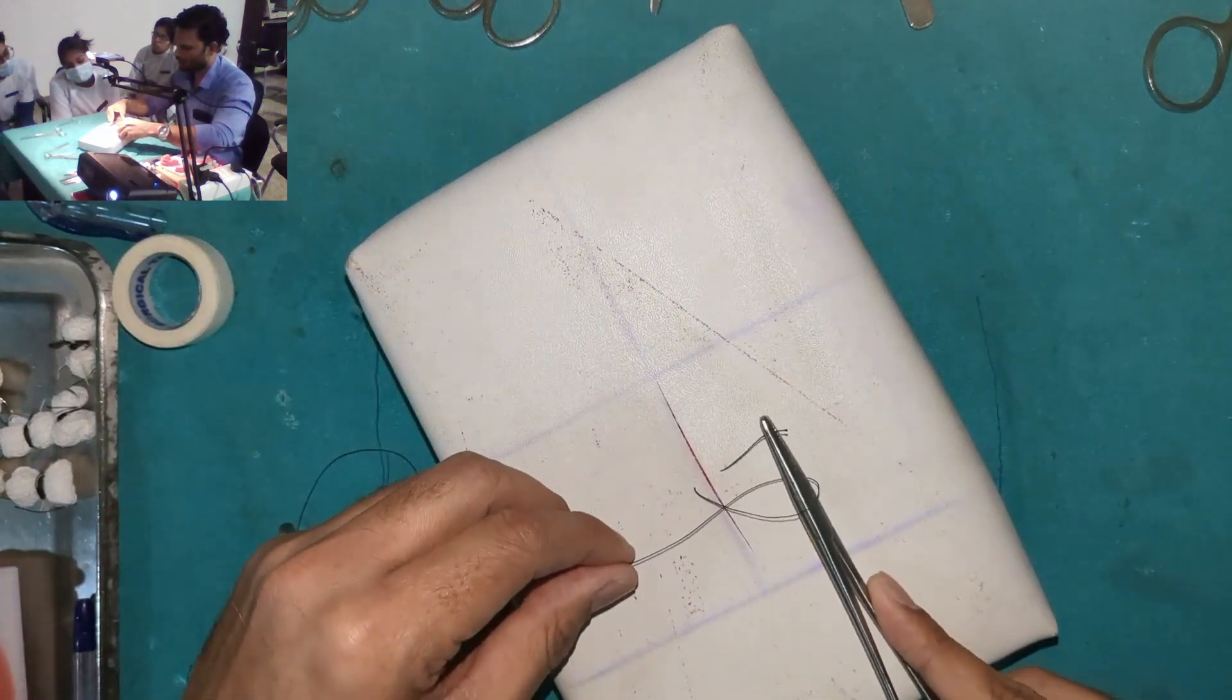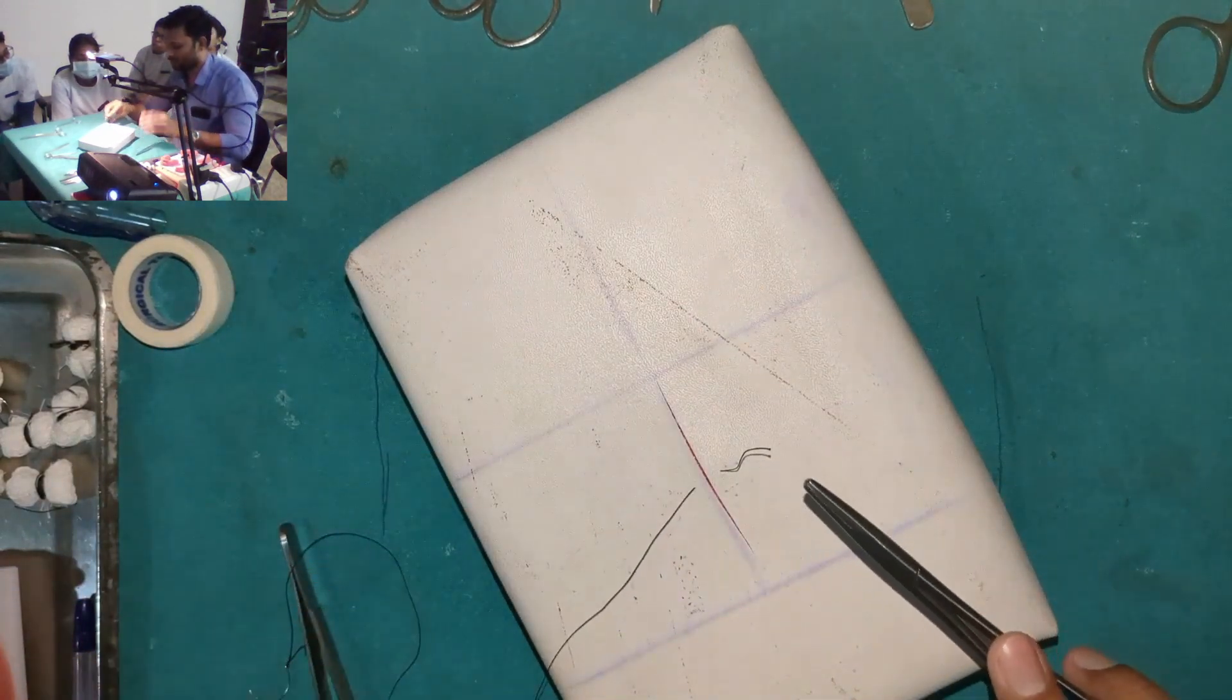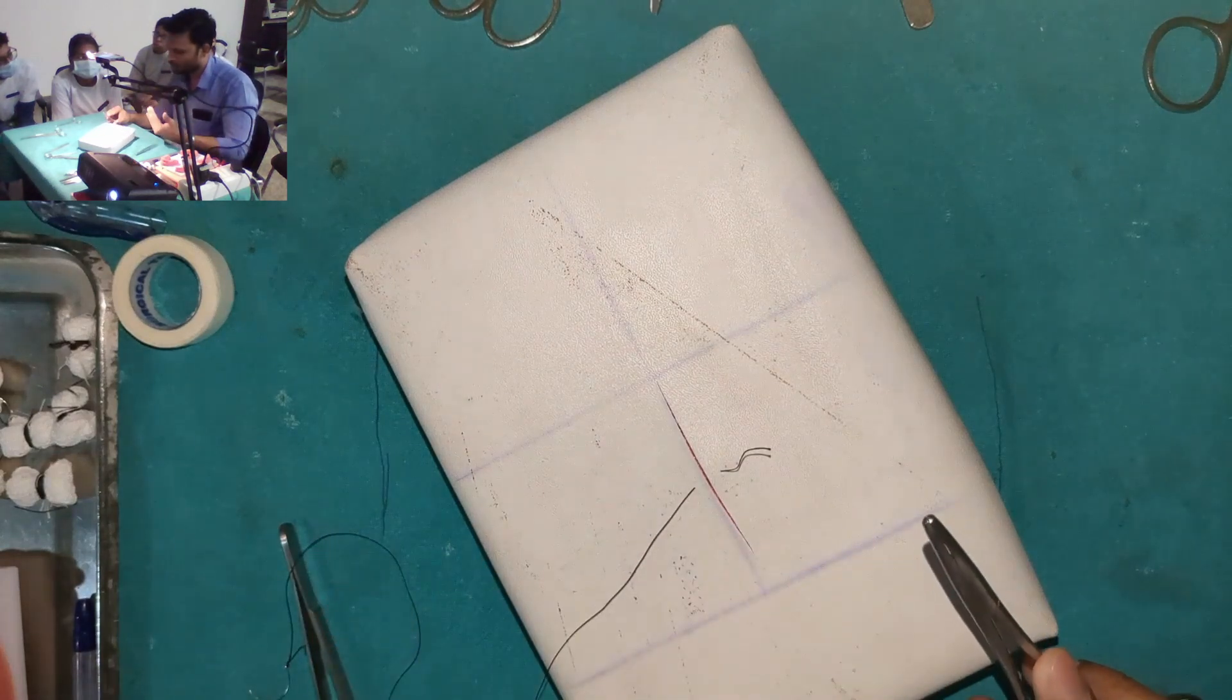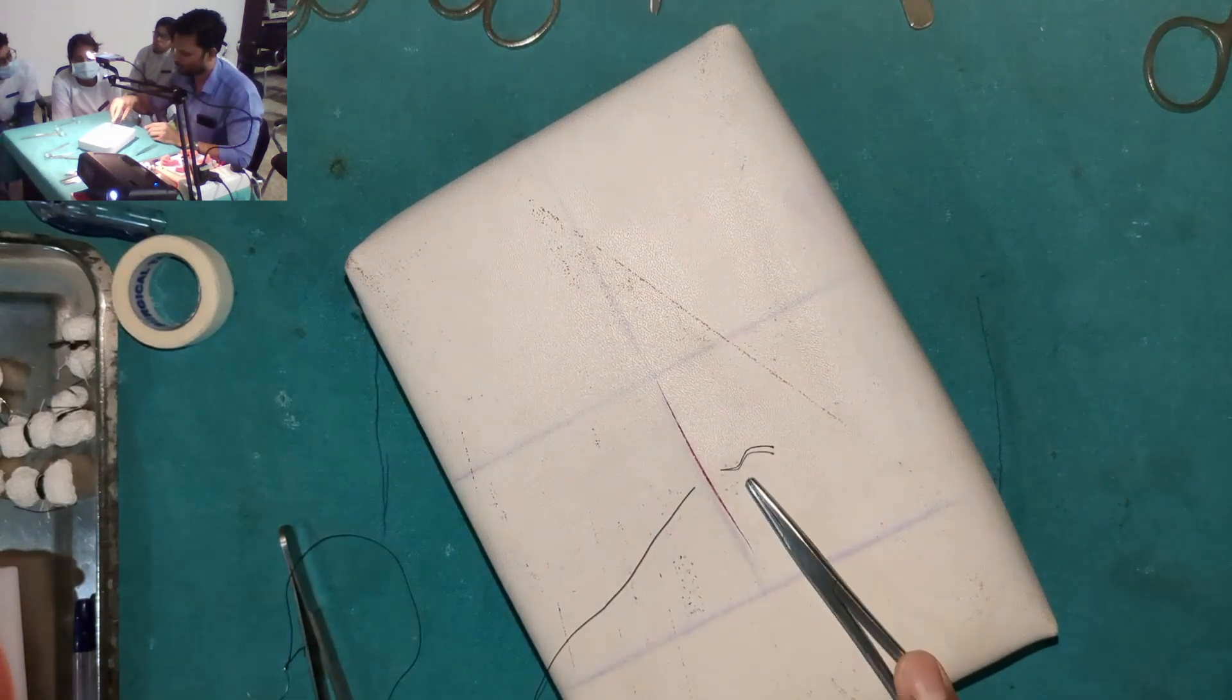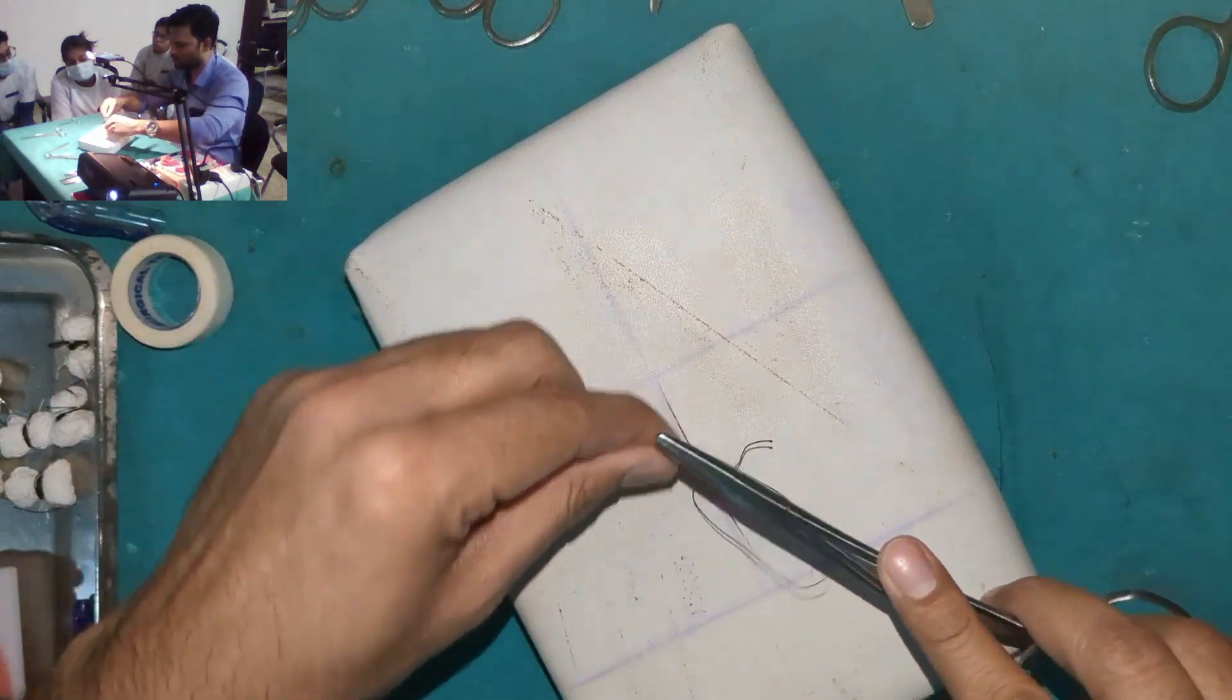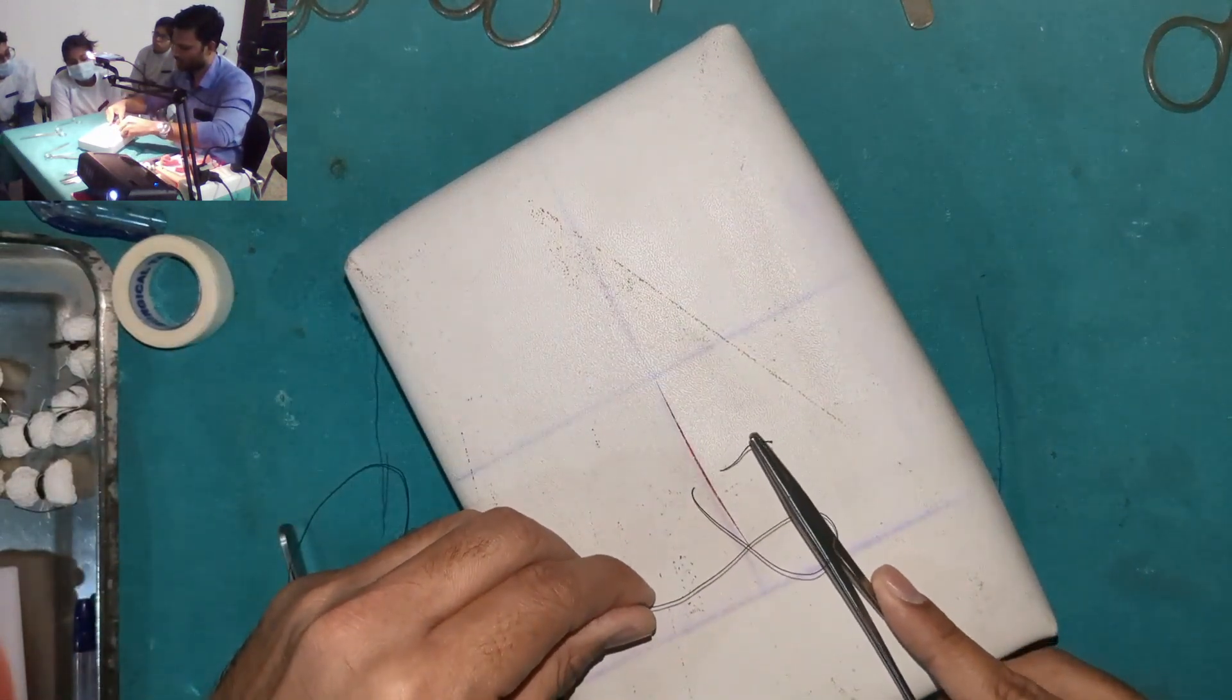So one throw, I'll hold it, and remember this, wherever you take the first bite, the knot ideally should go on that side. So here I took the first bite. So I throw this, I hold this.